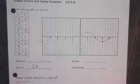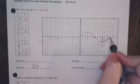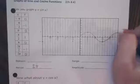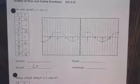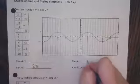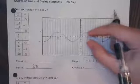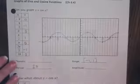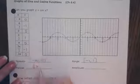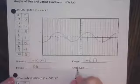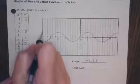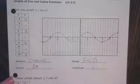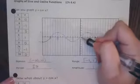It goes from this point until it returns back to this point, and then it repeats. All of our values are between negative one and one, so our range goes from negative one to one. Our domain is all real numbers, or negative infinity to infinity, as it goes all the way to the left and all the way to the right. The amplitude is the distance from the center to the top or the center to the bottom, so the amplitude in this case is one — it is one unit from the center to the top and one unit from the center to the bottom.